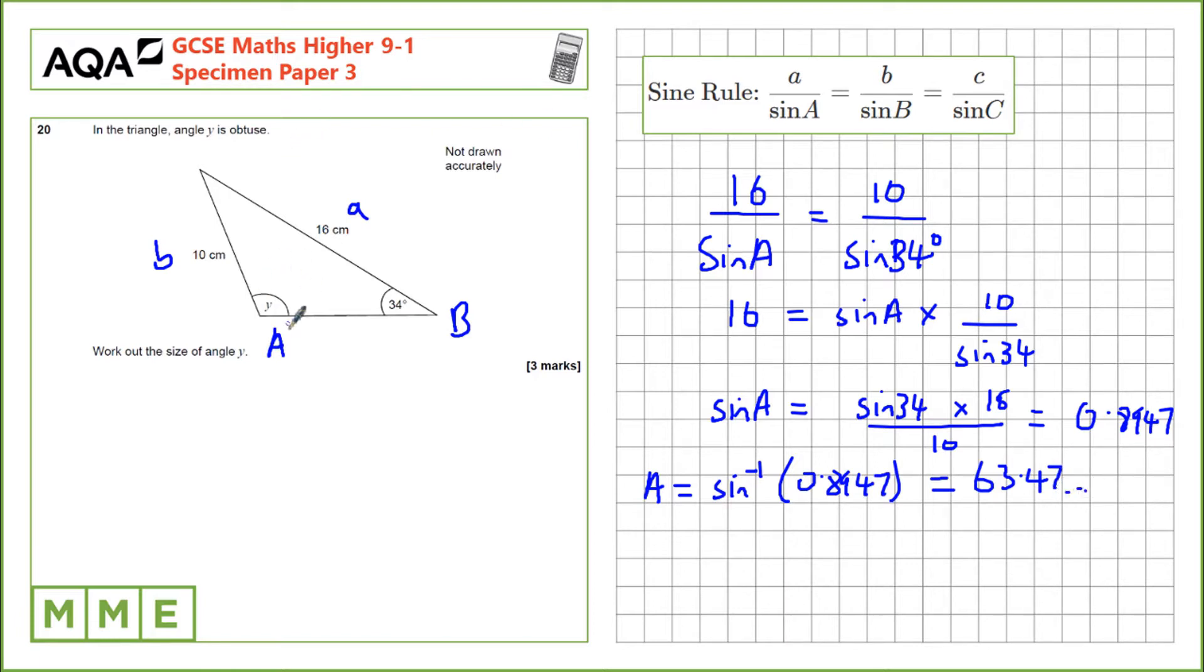The final thing is we're told that this angle is obtuse and 63 degrees is definitely not an obtuse angle. So we need to find a way to find the obtuse angle that also has a sine of 0.89.